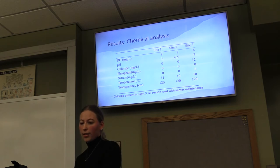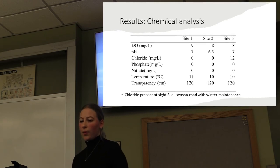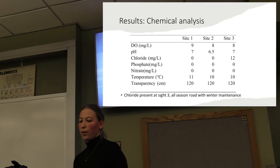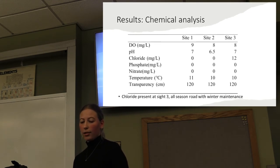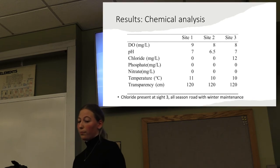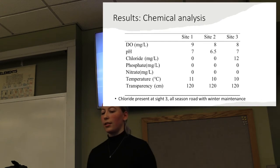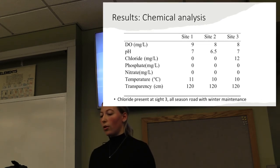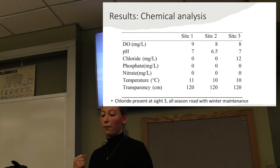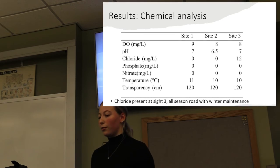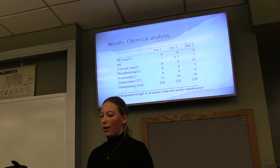Lastly, the chemical analysis of each site. There wasn't anything super interesting — it was pretty much what would be expected. DO and pH had slight differences between sites but were overall similar. Phosphate, nitrate, and transparency levels were completely the same across the three sites. The one notable finding was chloride levels: there was no chloride detected at the first two sites, but the third site did show some chloride, most likely because that road has winter maintenance and the salt used on the roads gets into the water, affecting chloride levels.